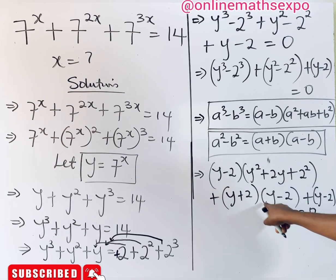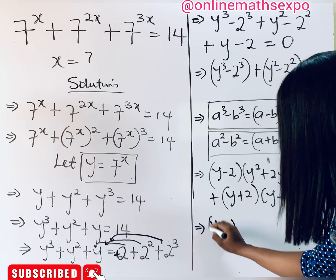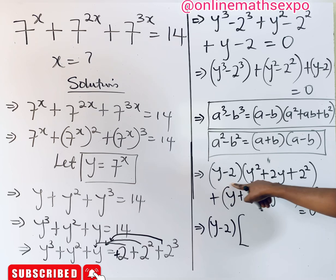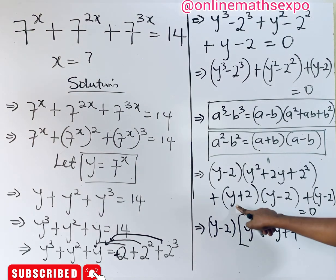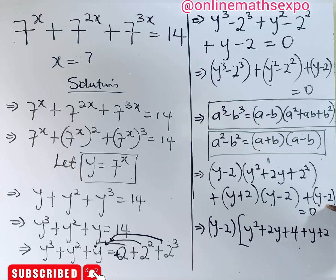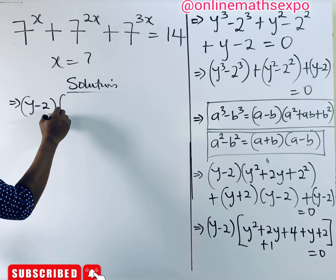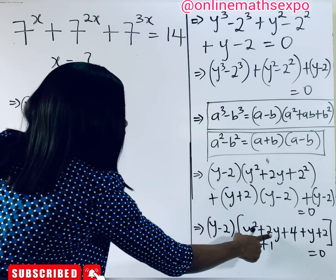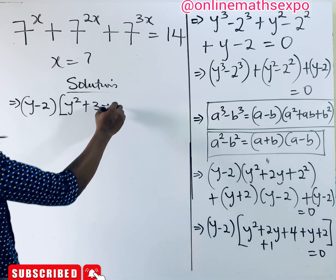Observe that (y minus 2) is common in each of these terms, so we factor it out. Factoring (y minus 2) out: dividing the first term leaves y squared plus 2y plus 4; dividing the second leaves (y plus 2); and dividing the last leaves 1. Combining like terms inside the bracket: 2y plus y gives 3y, and 4 plus 2 plus 1 gives 7. So we have (y minus 2)(y squared plus 3y plus 7) equals 0.